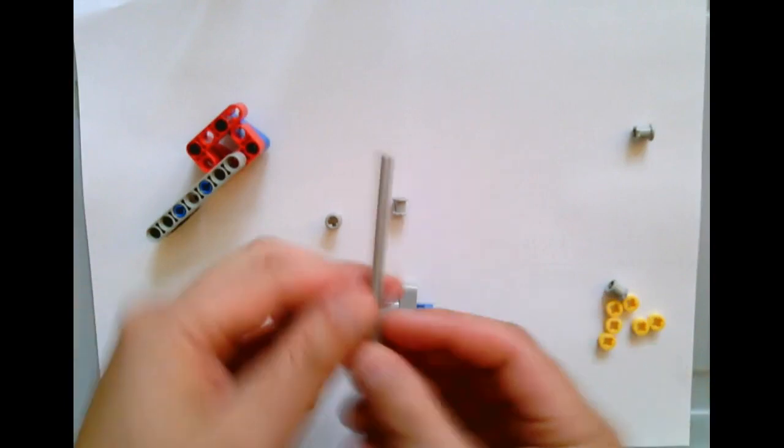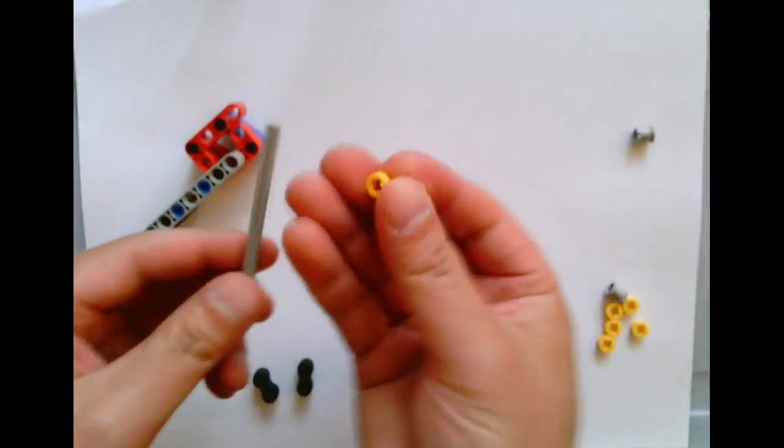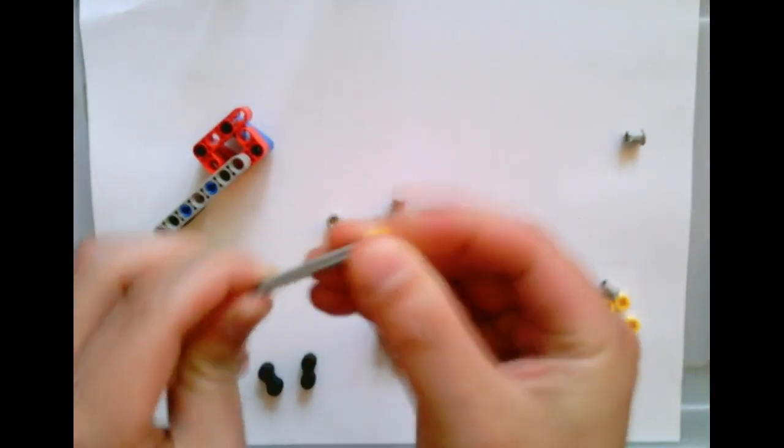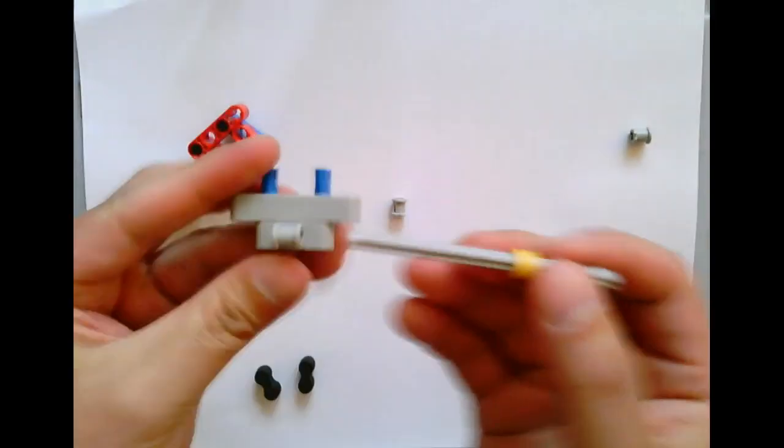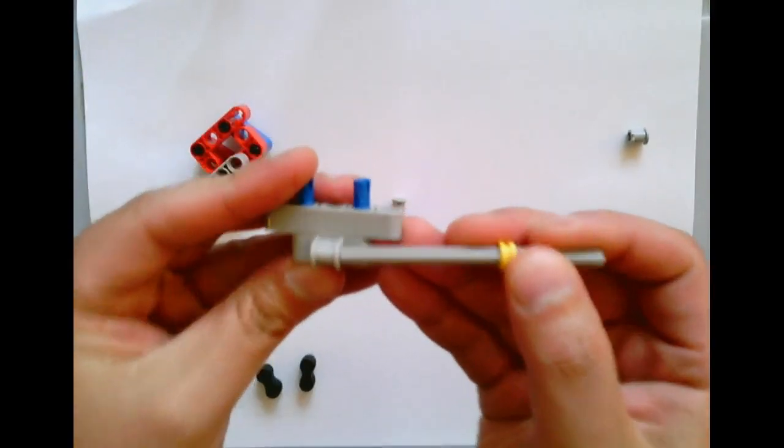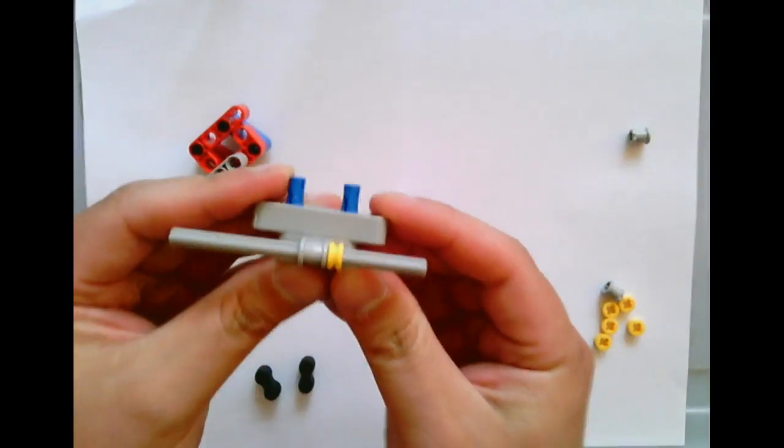So take your size 9 axle, put one of these little yellow pieces through it, and then put it through this piece that you made like so.